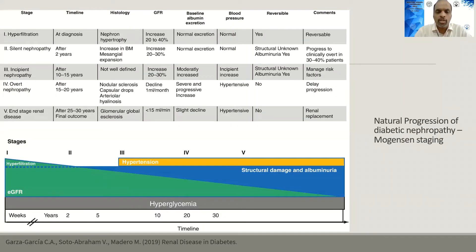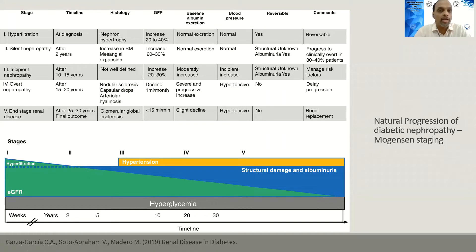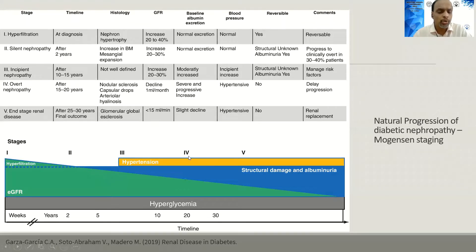The natural course of diabetic nephropathy has been described per the Mogensen staging, where it classically progresses through stages one to five. Stage one is hyperfiltration, stage two is silent nephropathy when GFR returns to normal, stage three is incipient nephropathy with first onset of microalbuminuria, stage four is overt nephropathy with macroalbuminuria progressing to end-stage renal disease at stage five. Onset of microalbuminuria is generally about five years after diabetes onset, macroalbuminuria at 10 to 15 years, and end-stage renal disease at 20 to 25 years.